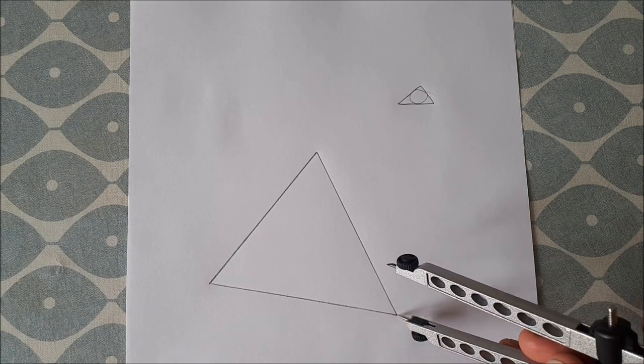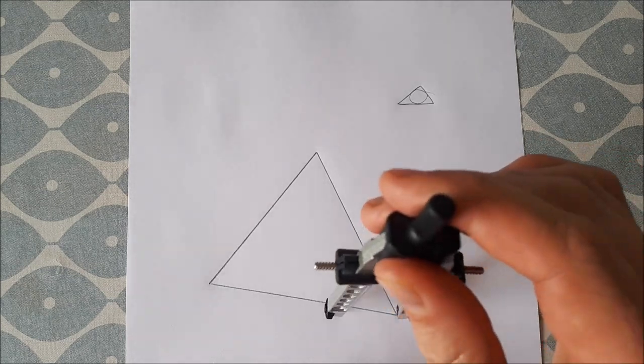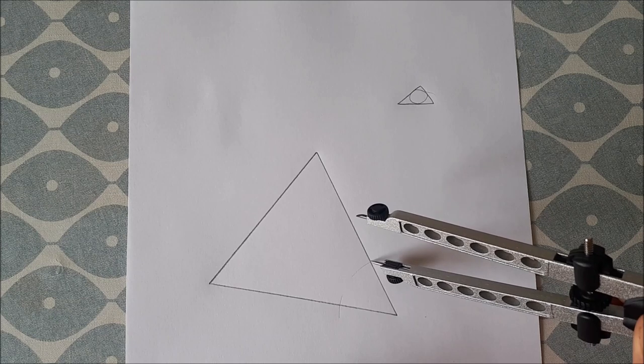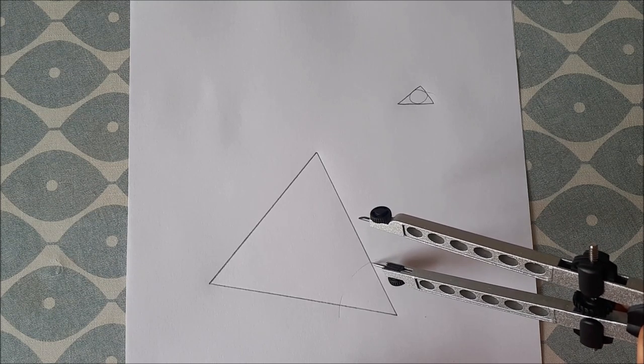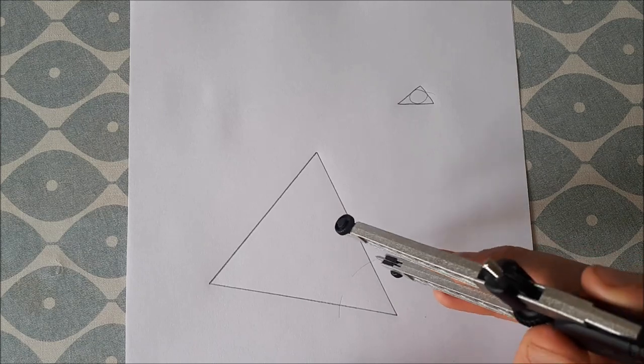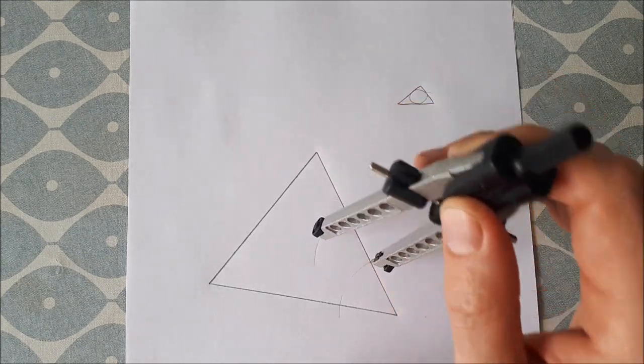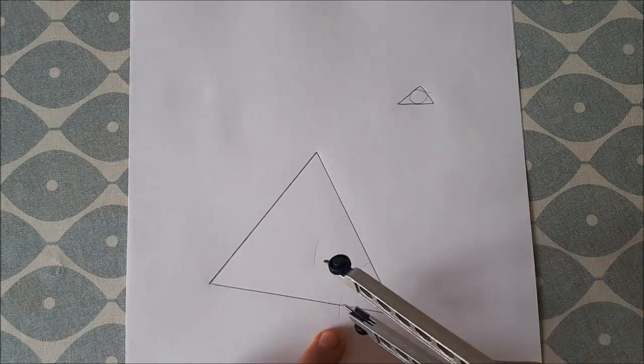To bisect an angle, you push the tip of your compass at one of the vertices and draw an arc on each of the lines. Keep your compass at the same length, move it to the point of intersection of the arc and the line, and scribe another arc.